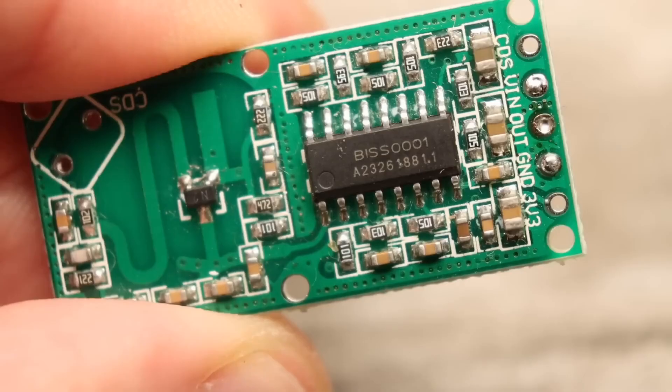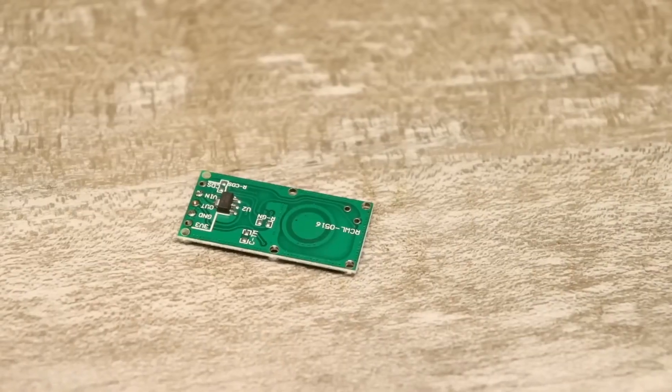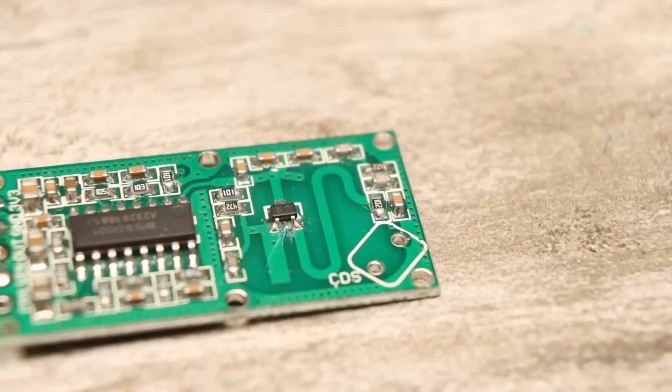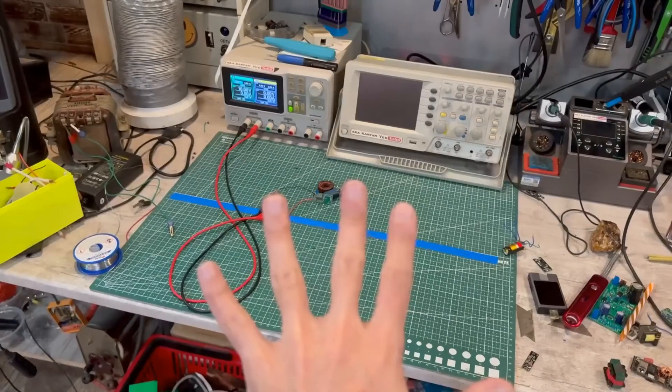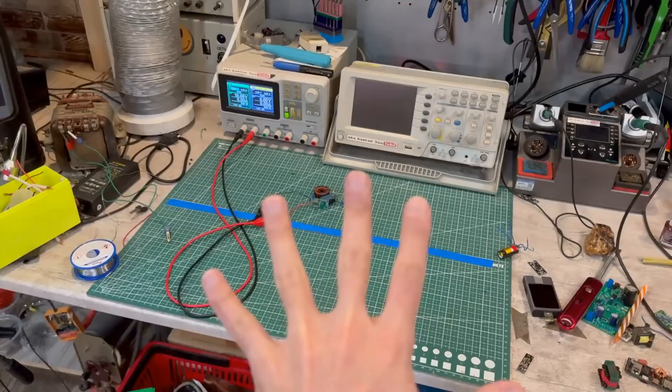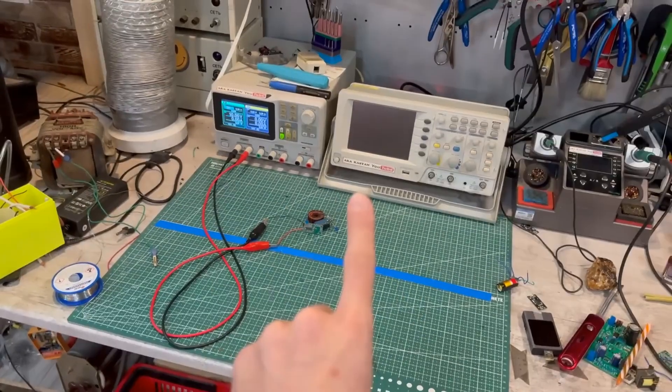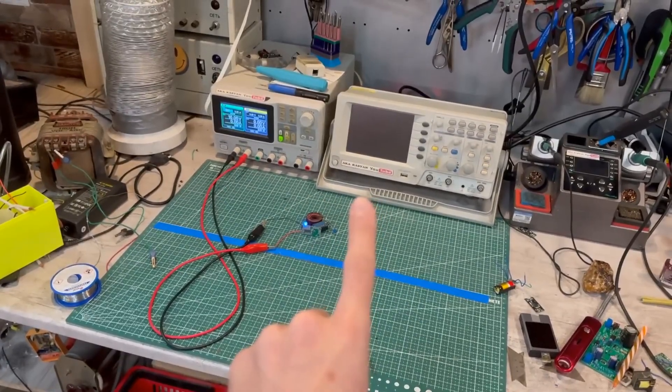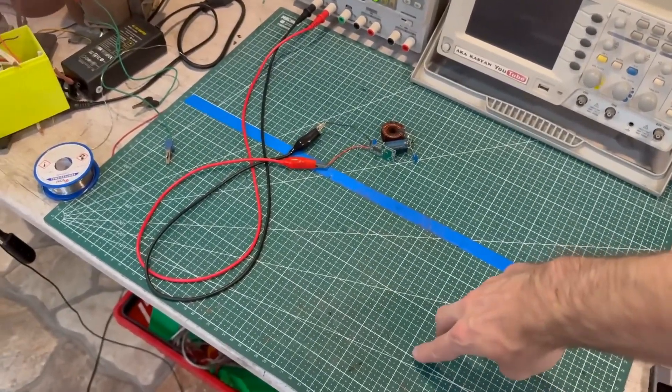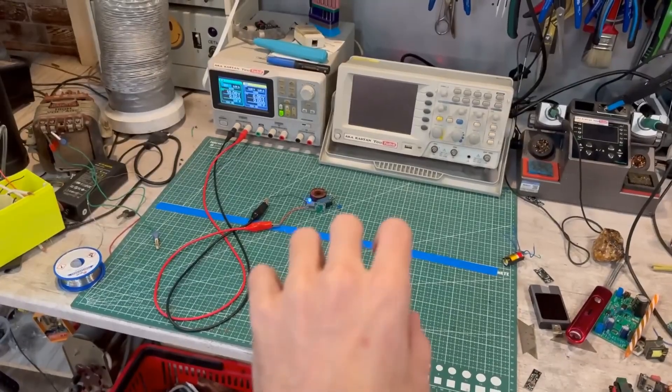RCWL0516 module. This is a popular microwave motion sensor based on the Doppler effect. Unlike regular sensors, like IR sensors, a Doppler sensor is super sensitive and all-seeing. It emits a microwave signal and analyzes the reflection from moving objects. Thanks to this, it can detect even the slightest movements. It's impossible to pass by a Doppler sensor unnoticed. It can even see through walls, glass, and plastic. It's immune to environmental conditions, and its operating temperature range is from minus 20 to plus 80 degrees Celsius.